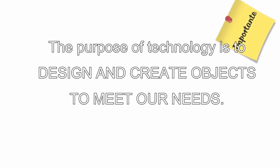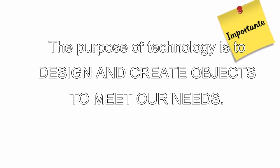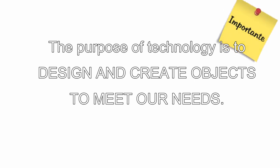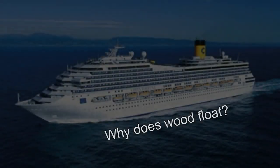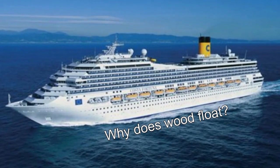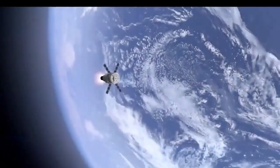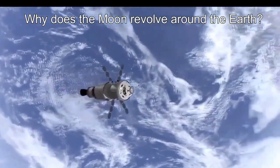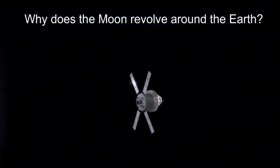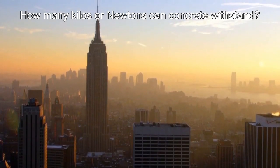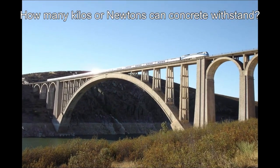On the other hand, the goal of technology — that is, the goal of architects and engineers — is to solve problems. The purpose of technology is to design and create objects to meet our needs. Its purpose is not to explain anything; its purpose is to create useful objects. For example, an engineer might use the scientific knowledge that explains why wood floats in order to build a ship. They could use scientific knowledge regarding why the moon revolves around the earth to help create a satellite that makes it possible to communicate by phone with someone on the other side of the world. Or they might use data that measures the strength of concrete in order to design a building or a bridge.